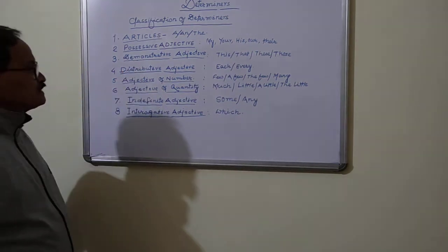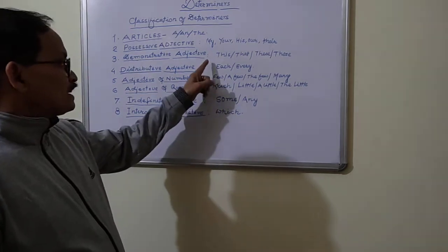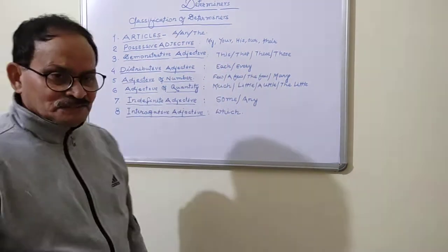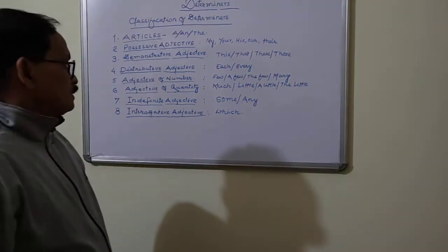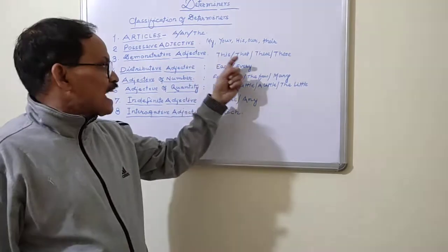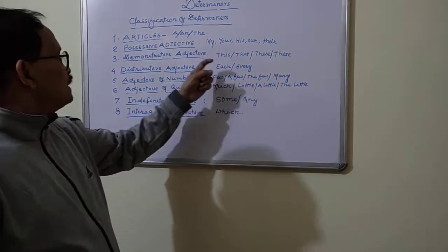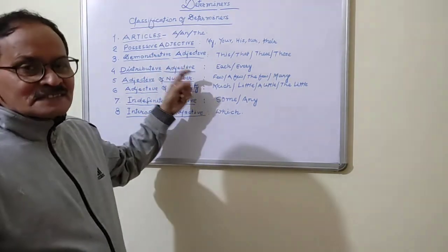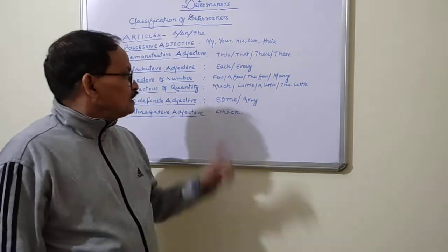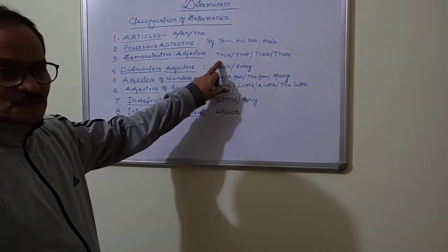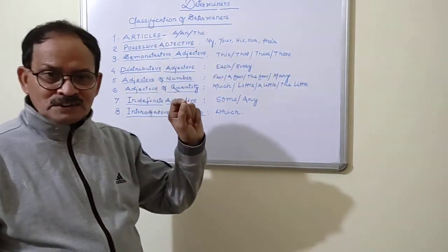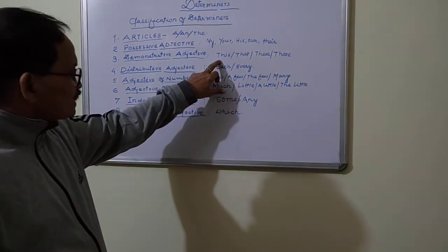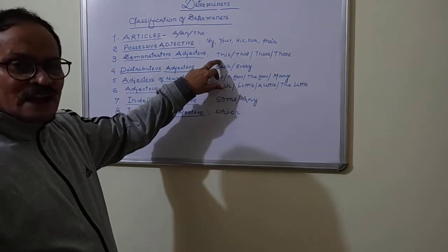The third classification is demonstrative adjective. Examples are: this, that, these, those. In order to use a demonstrative adjective, we have to be very careful and we have to put a noun just after this, that, these, or those. Then only it will be known as a demonstrative adjective, because the function of an adjective is to classify or signify a noun. For example, 'this book is very costly' — 'book' is the noun here and 'this' is the demonstrative adjective. So 'this' is not simply a demonstrative adjective; rather, it is also used as a Determiner.